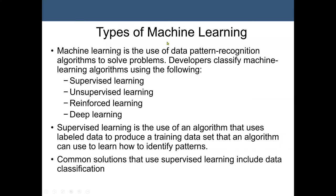Types of machine learning: machine learning is the use of data pattern recognition algorithms to solve problems. Developers classify machine learning algorithms into the following categories: supervised learning, which is classification; unsupervised learning, which is clustering; and also reinforcement learning and deep learning.